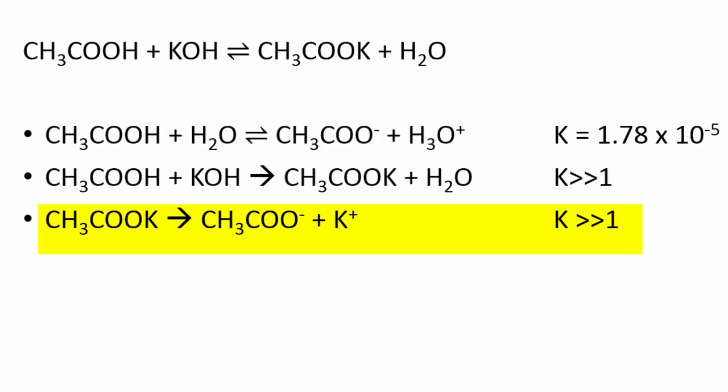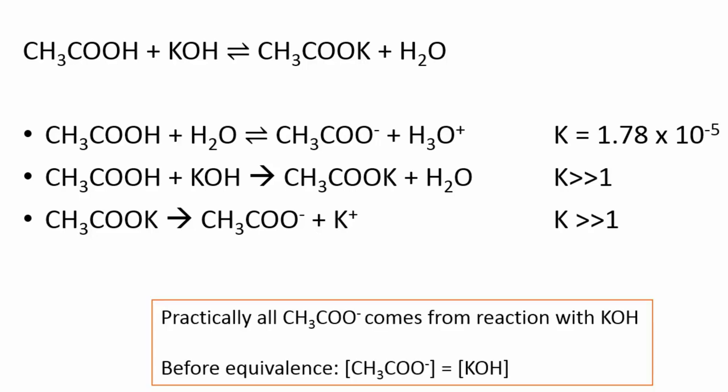And finally, this salt that's formed is an ionic salt. It will dissociate very well into the ethanoate anion and the potassium ion. What this means then is that practically all the ethanoate anion comes from reaction with potassium hydroxide. And we tend to say that the concentration of ethanoate anion is equal to the concentration at base that we've added. We'll see in a little while how we're going to amend that very slightly to take into account the first equilibrium reaction here of the three that we've shown.